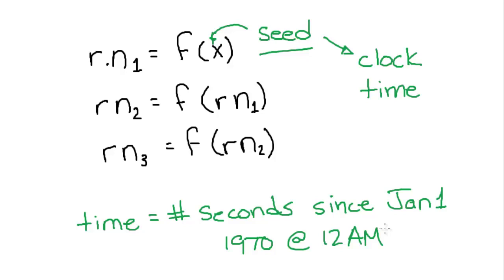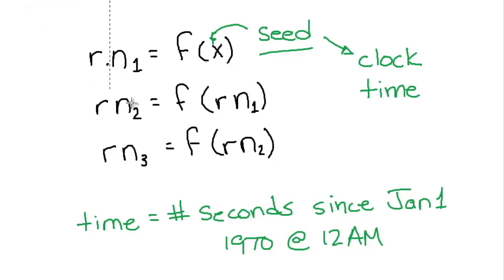As computers have gotten more complicated, and with the birth of the internet, there are different ways of getting a random seed instead of using the clock. For instance, you can go on the internet and find atmospheric pressure from a sensor, or measure the cosmic background radiation level, and use that measurement to generate the seed — because those things are part of nature, they're inherently random. But in programming for now, we're just going to use the clock.